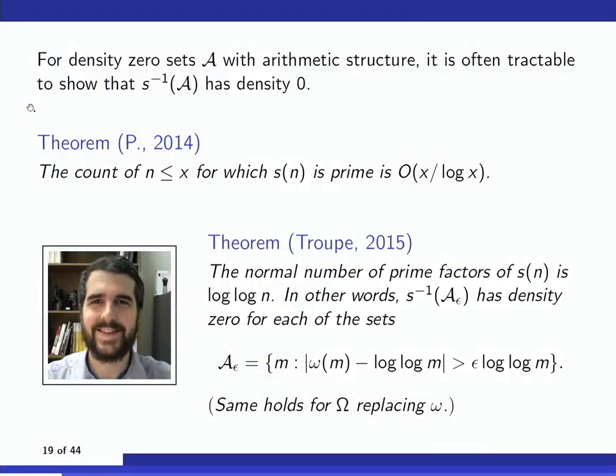Here's another confirming instance. The normal number of prime factors of s(n) is log log n — meaning ω(s(n)) is asymptotic to log log n on a set of density one. This can be viewed as confirming the EGPS conjecture for sets A_ε of numbers with very far from the expected number of prime factors.